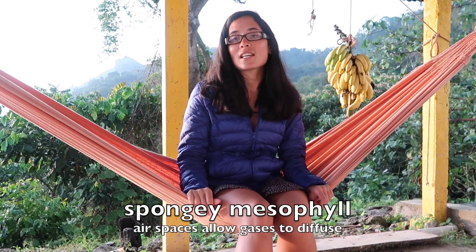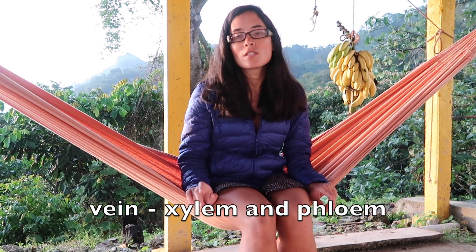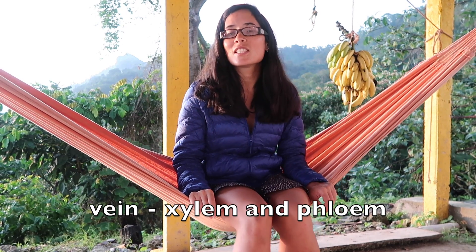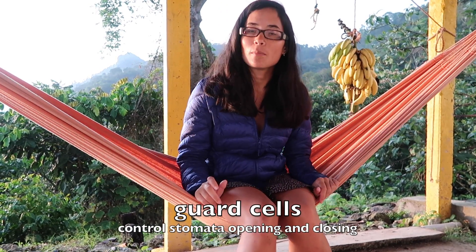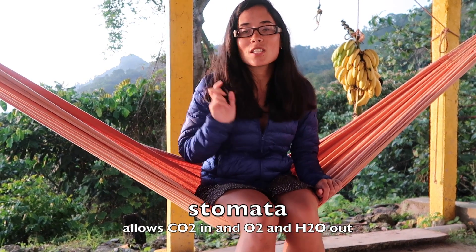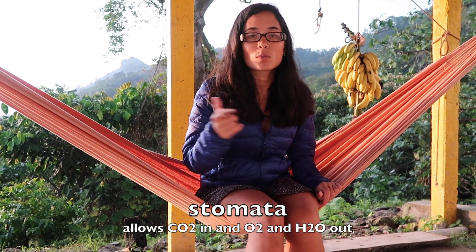Underneath that you have the spongy layer. Remember that has lots of air spaces to allow gases to diffuse. Things like carbon dioxide and oxygen need to move through the leaf. You have the vein, which contains the xylem and the phloem. So remember the xylem brings water and mineral ions into the leaf. The phloem takes away the sugar that the plant leaf has made. Underneath that you have the lower epidermis. Don't worry too much about that. They won't expect you to write anything about that. And then lastly and most importantly, you have the guard cells. And their role is to control the opening and closing of the stomata. Because remember the stomata is a hole. And it's through that hole that carbon dioxide is allowed into the leaf. Oxygen leaves the leaf as well as water.